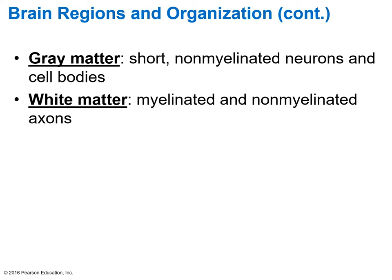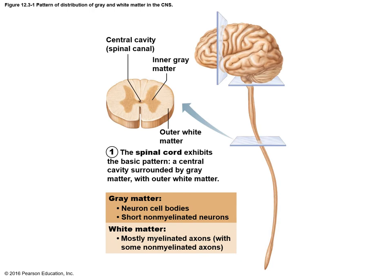As we study the CNS, we discuss gray matter and white matter. Gray matter contains neural cell bodies, somas, and unmyelinated neurons. White matter is myelinated and also contains some non-myelinated axons — myelination gives the whitish color because of the lipids. In a cross-section of the spinal cord, white matter is mostly superficial on the outside, while gray matter is deeper in the interior.